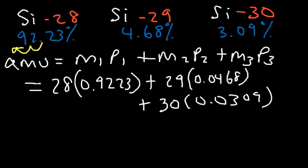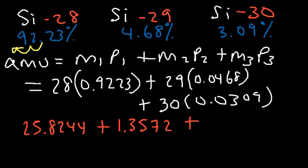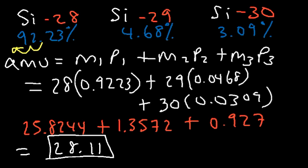So I'm going to do this one step at a time. 28 times 0.9223, that's about 25.8244. And 29 times 0.0468, that's 1.3572. And then plus 30 times 0.0309, that's 0.927. So let's go ahead and add these three numbers. 0.927 plus 1.3572 plus 25.8244. That's about 28.111. So that's the average atomic mass of elemental silicon.